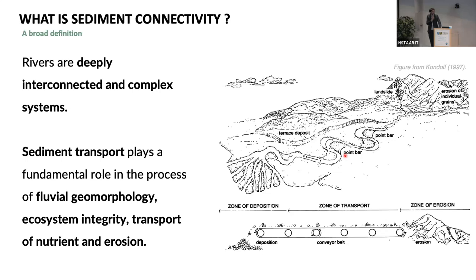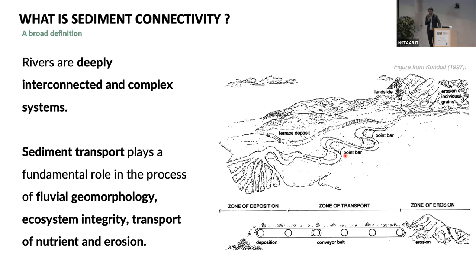So what is river sediment connectivity or disconnectivity? We can define it as the connected transfer of solid material between all the areas of erosion in the river system to the areas of deposition. We know that natural river sediment connectivity is connected to the health of the river system, the ecosystem, but also the availability of ecosystem goods and services provided for human use.